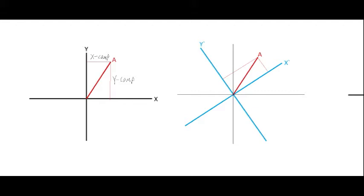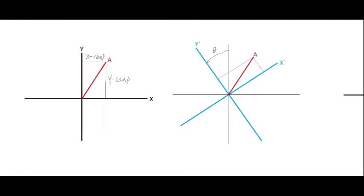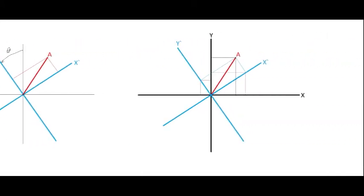If we want to transform our axes so that they are rotated by some amount — some angle theta here — our vector a remains the same. Now we want to get the new coordinates here, shown in blue, in terms of the old coordinates. We have the vector components in the old coordinates with these black lines, and now we have the new ones here in these blue lines.